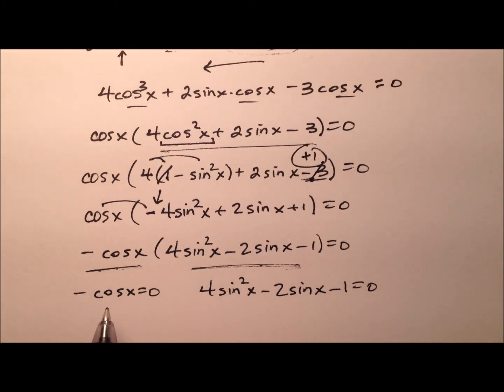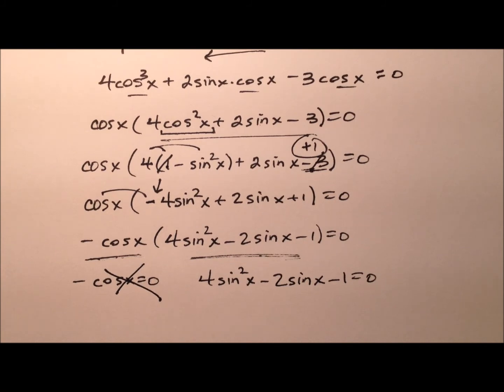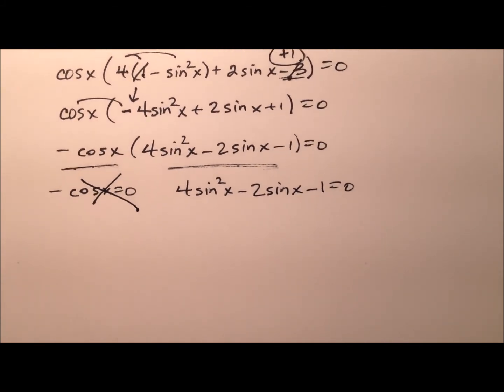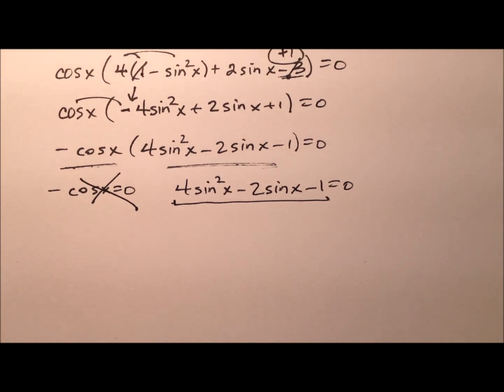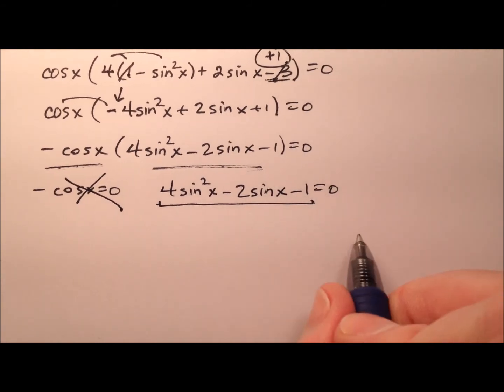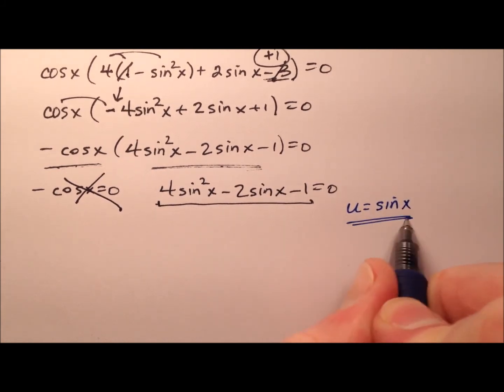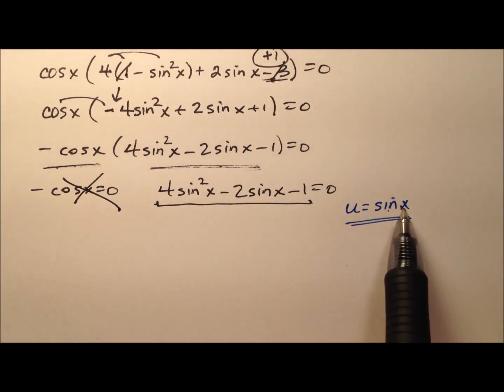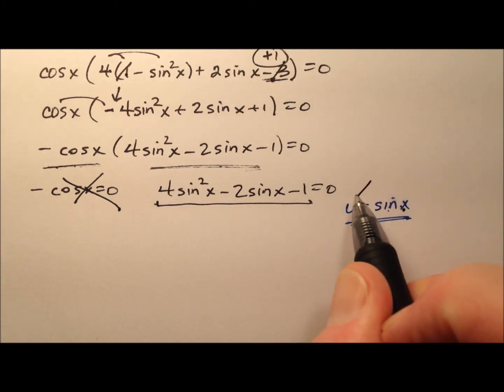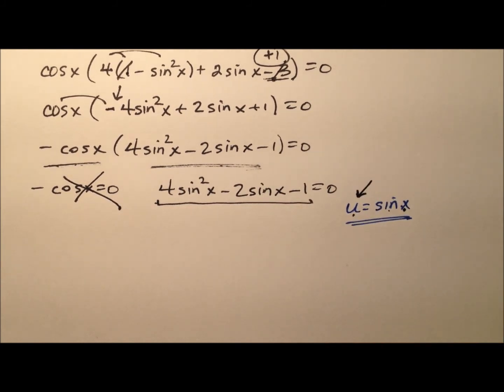Well, this negative cosine x equals zero really isn't going to give me anything that I'm interested in, so we're going to ignore it. But we do have this equation right there that is quadratic in nature. So let's make a quick substitution. We're going to say u equals the sine of x. Remember that x is 54 degrees, and that's kind of what we're looking for. So this will be the sine of 54, and we're saying that's u. So if we're able to solve for u, we'll be solving for the sine of 54 degrees.